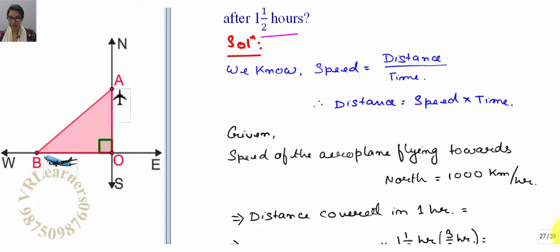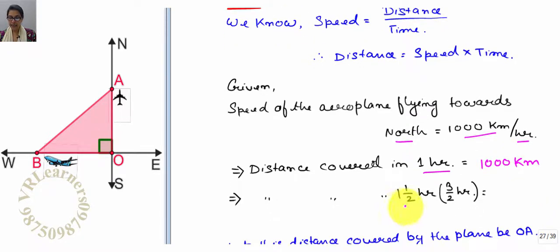Now here we have given that the flight north is flying, this is 1000 km per hour. That the flight will cover 1000 km in one hour. By this we can find that one and half hours the flight north will cover, when 1000 km in one hour, then one and half hours will be 1000 multiplied by...